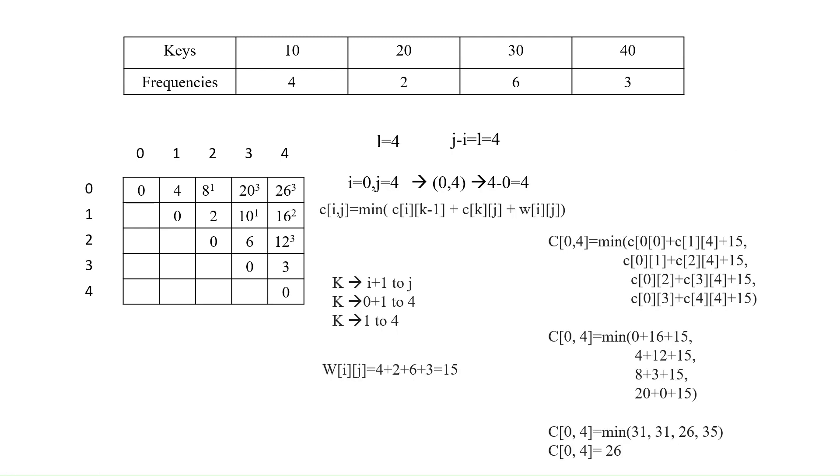Now, for length L is equal to 4, we have to consider total keys by constructing trees for them is difficult. So, let us use the formula for 0 comma 4, that is C of IJ is equal to minus C of I, K minus 1 plus C of KJ plus W of IJ. K will be formed I plus 1 to J, that is from 0 plus 1 to 4, that is 1 to 4 and W of IJ is equal to 4 plus 2 plus 6 plus 3 is equal to 15. Sum of all frequencies up to the length. Thanks for watching.